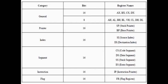Segment registers. First is code segment: a 16-bit register containing the address of a 64 KB segment with processor instructions. The processor uses the code segment for all accesses to instructions referred to by the instruction pointer register. The code segment register cannot be changed directly; it is automatically updated during jump, call and return instructions.